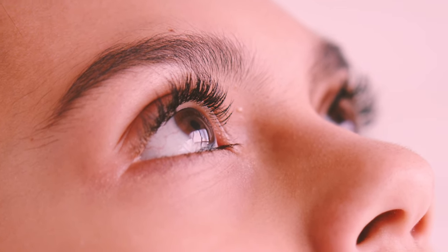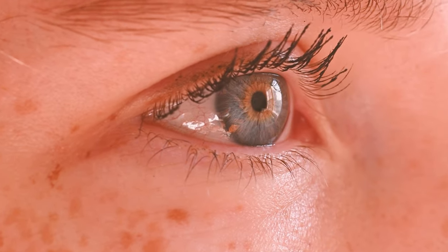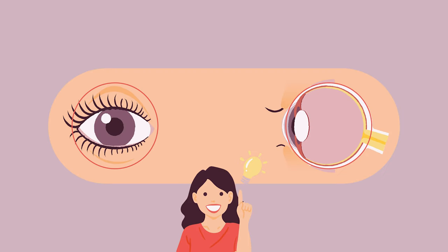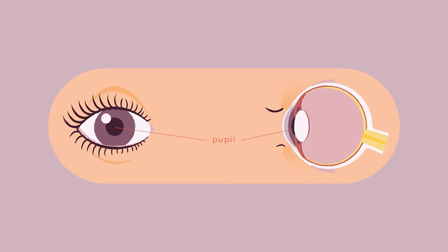Eye anatomy: as we all know, the eye is a three-dimensional object, which means that our perception of it changes with perspective. This also means that the two-dimensional shapes and lines we draw must change to convey the eye's 3D form. The eyeball is a sphere consisting of the sclera (the white part), the iris, and the pupil. Skin wraps around the eyeball creating the upper eyelid, the eyelid crease, and the lower eyelid, with eyelashes growing on both lids.